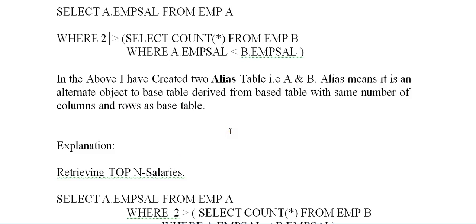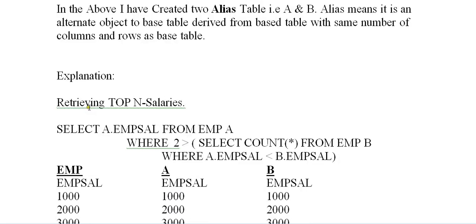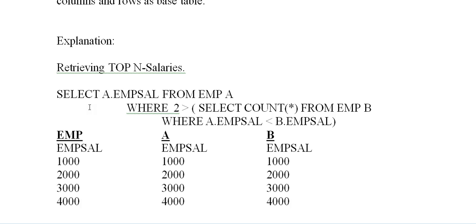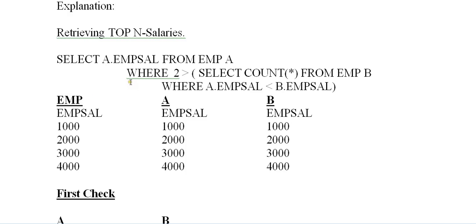An alias is an alternative object derived from a base table, with the same number of columns and rows as the base table — essentially a copy of the base table. So aliases A and B both have the same rows and columns as the original EMP table.